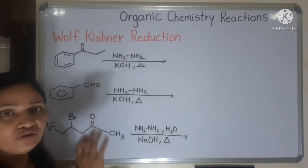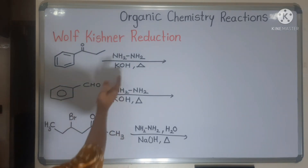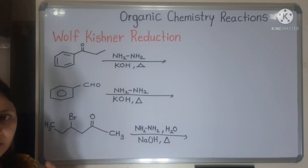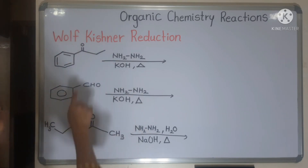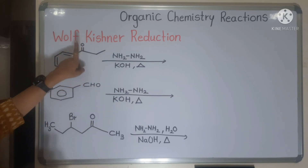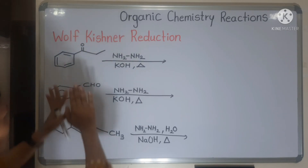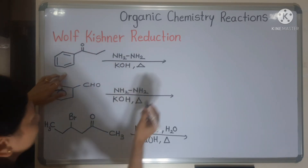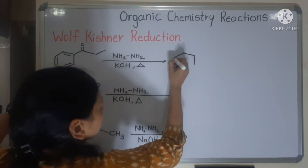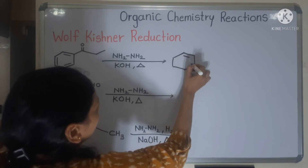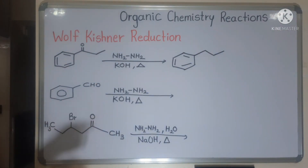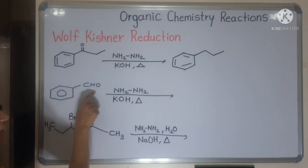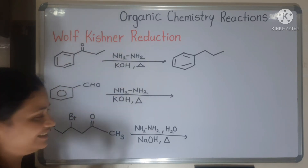Now here are some examples of Wolf-Kishner reduction. In Wolf-Kishner reduction, the carbonyl group gets converted into a hydrocarbon group. The first example: a ketonic carbonyl group — C=O gets converted into CH2, remaining portion stays the same. Second example: an aldehyde undergoes Wolf-Kishner reduction — CHO gets converted into CH3.